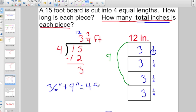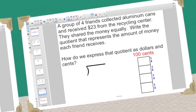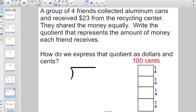It's just about that easy. I'm technically not teaching you anything new. This is just combining two skills we've gone over previously. Check out this one. A group of four friends collected aluminum cans and received $23 from the recycling center. They shared the money equally. There's your clue that it's got to be divided, right? Write the quotient that represents the amount of money each friend receives. So, you've got $23 and four friends sharing it out equally. I probably better get my dollar sign in there, right?